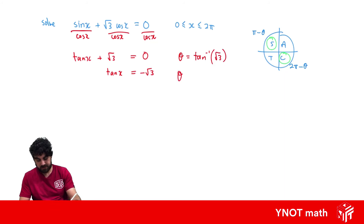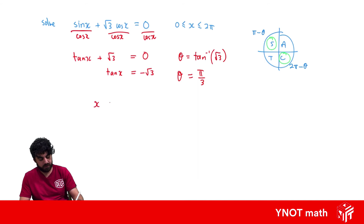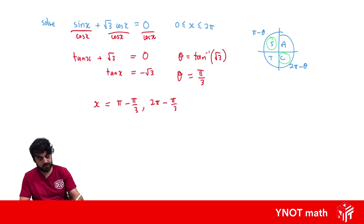Once we have that base angle, we can solve for x. We know x equals two answers: in the second quadrant, π minus the base angle gives us π − π/3; and in the fourth quadrant, 2π minus the base angle gives us 2π − π/3. So our final answers for x are 2π/3 and 5π/3.